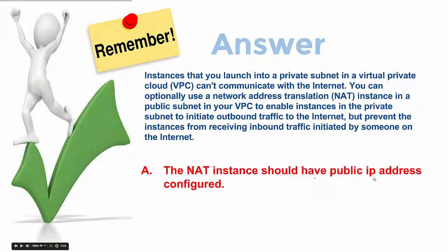The correct answer is: the NAT instance should have a public IP address configured. Instances that you launch in a private subnet in a VPC can't communicate with the internet. You can optionally use a network address translation instance in a public subnet in your VPC to enable instances in the private subnet to initiate outbound traffic to the internet, but prevent those instances from receiving inbound traffic initiated by someone on the internet.